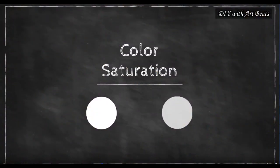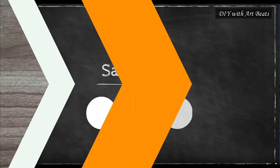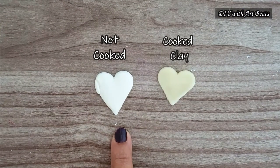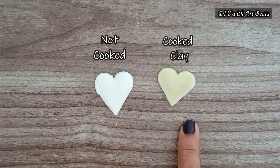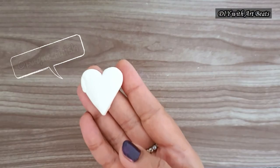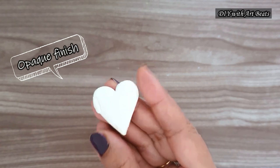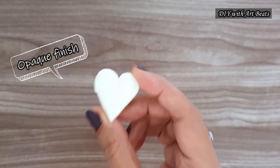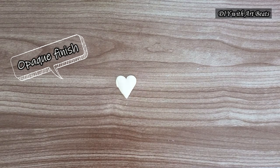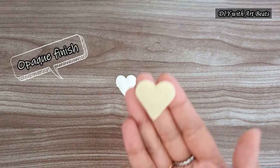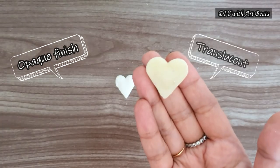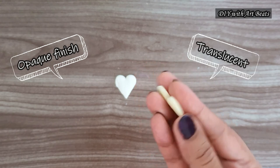Now let's compare their color saturation. This is the not cooked clay and this is cooked clay after drying. And you can see that not cooked clay is more opaque in finish and colors look more saturated in this. On the other hand, the cooked cold porcelain clay looks translucent and less saturated in colors.